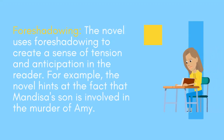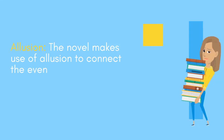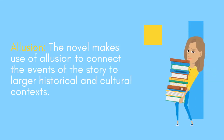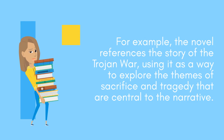The novel uses foreshadowing to create a sense of tension and anticipation in the reader. For example, the novel hints at the fact that Mandisa's son is involved in the murder of Amy. The novel also makes use of allusion to connect the events of the story to larger historical and cultural contexts — for example, referencing the story of the Trojan War as a way to explore the themes of sacrifice and tragedy that are central to the narrative.